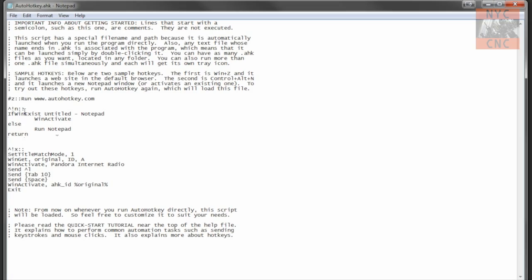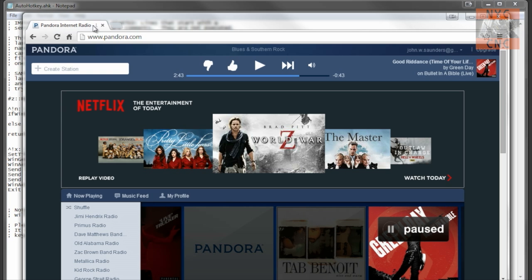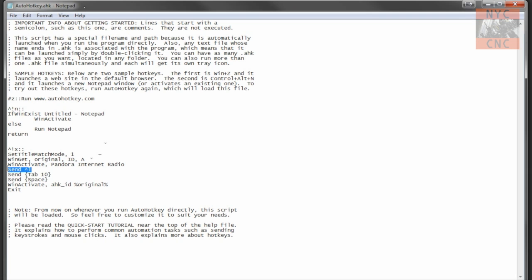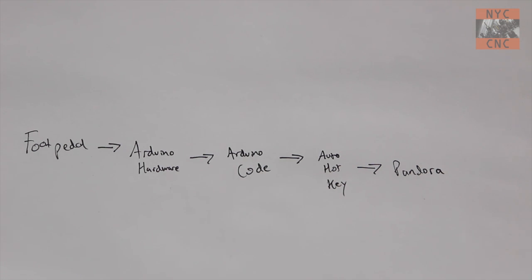So if we hop into the auto hotkey code, the example that auto hotkey comes with is control alt N to open notepad. So I just copied that same line down and changed it to X for Chrome. These two lines couldn't tell you what they mean. I just found them when I was looking for the examples to open up the web browser active tab. This does make sense window activate or when activate, and then that corresponds to the header in Pandora internet radio right there. Then what I said, send control L tab 10 times over and then space. And then this goes back and activates the window you were just in, which I think is really cool because it brings you back to where you were.